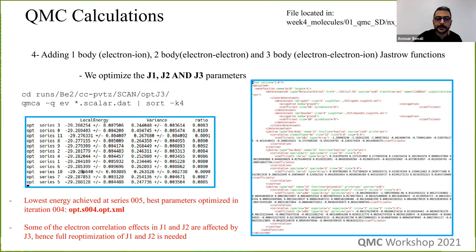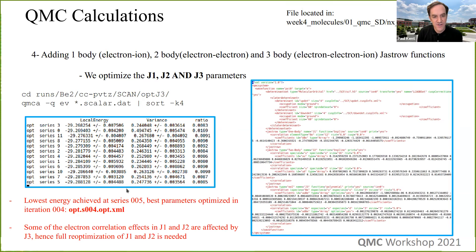Regarding adding custom Jastrow forms: in QMCPACK we can change the Jastrow form. Several are already implemented — B-spline, Pade, and others added recently. There is also a path for implementing new Jastrow functions. You need to know the form, follow the manual and work with developers, specify parameters to optimize, and the optimizer will handle them. There is a simple example in the manual of adding a one-parameter Jastrow function, so if someone is interested that path is documented.